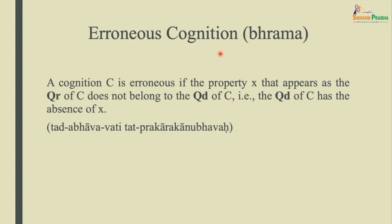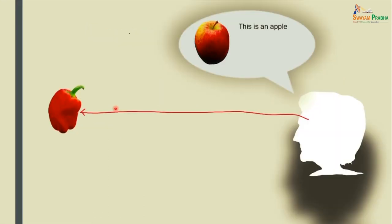Erroneous cognition (Aprama): cognition C is erroneous if the property X that appears as the qualifier of C does not belong to the qualificant of C — that is, the qualificant has the absence of X. Tad abhavavati tad prakārakānubhavaha is aprama. It is an illusion. So this is an analysis of an illusion.